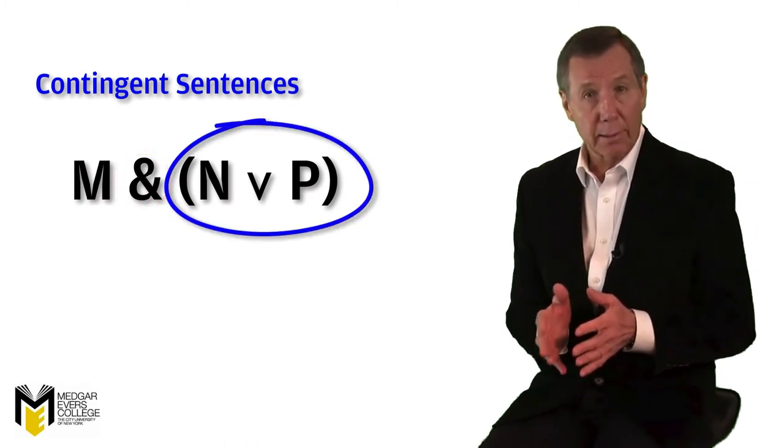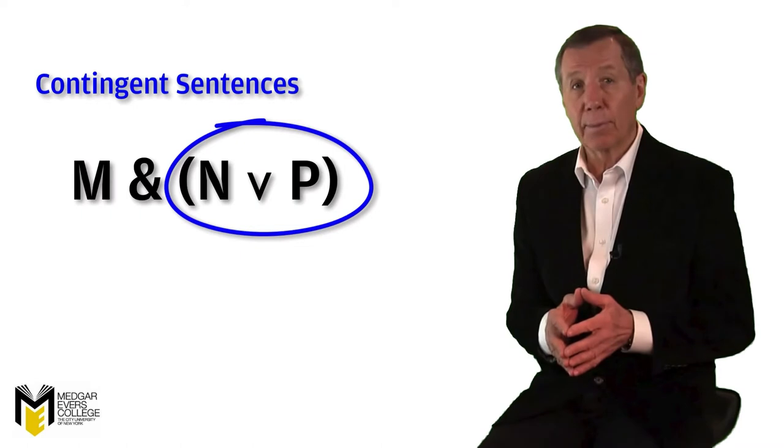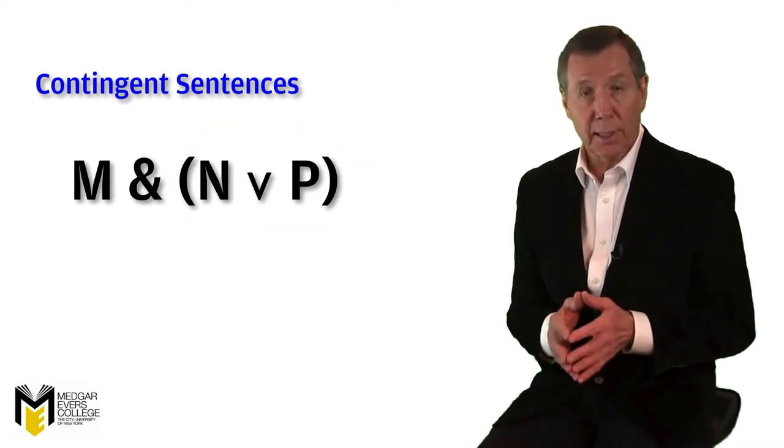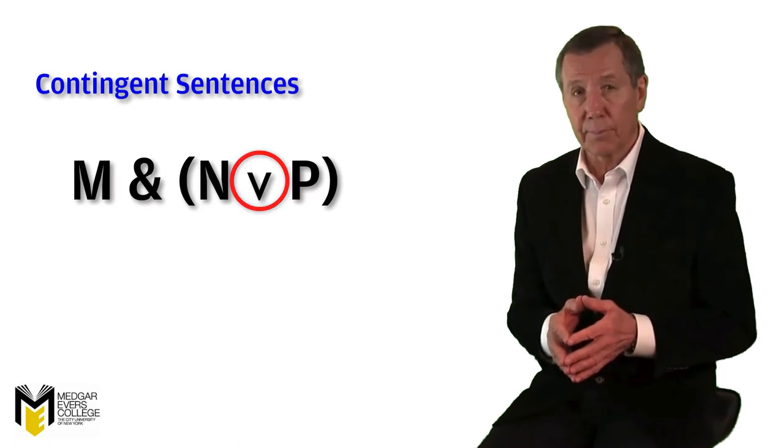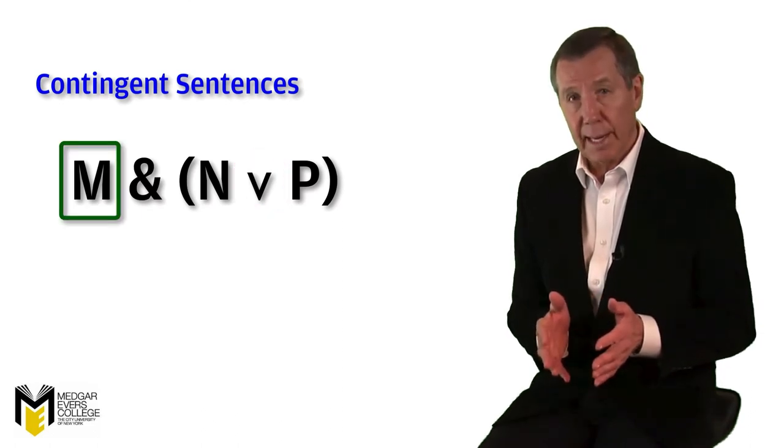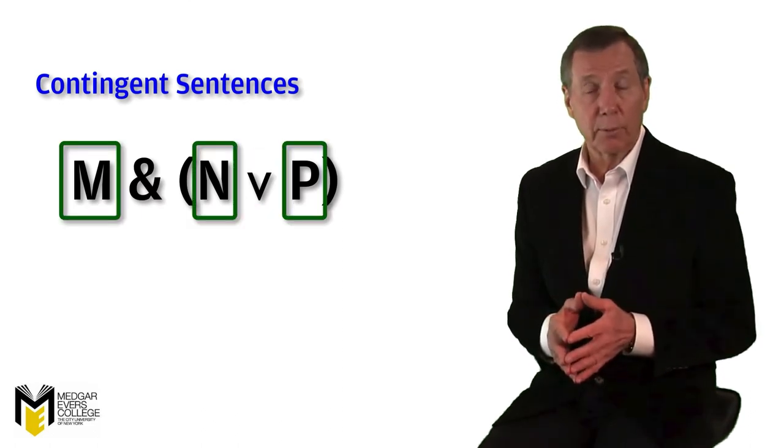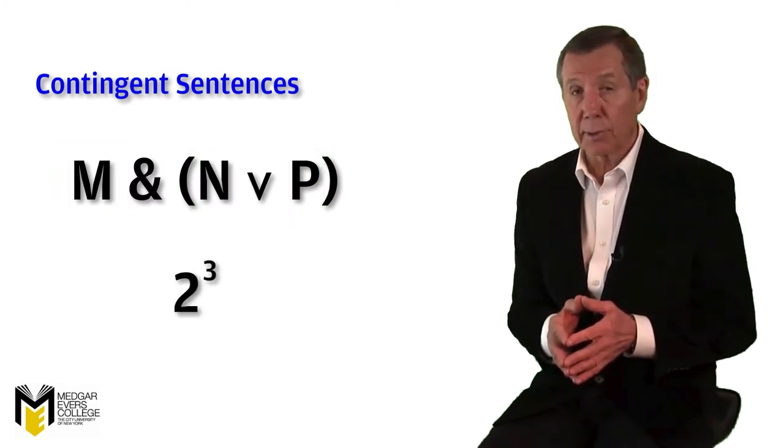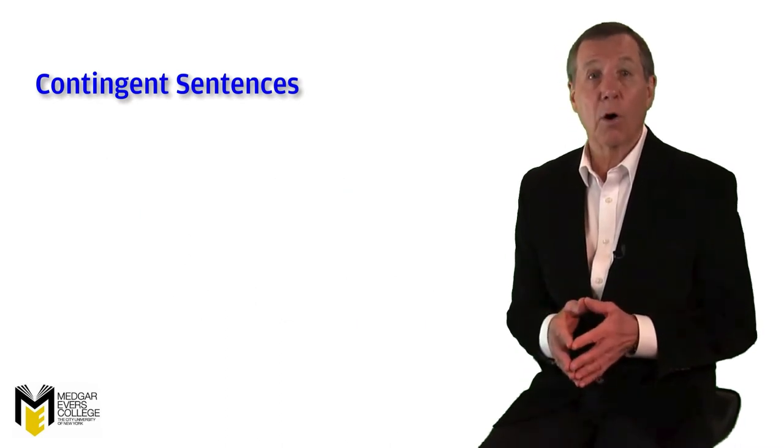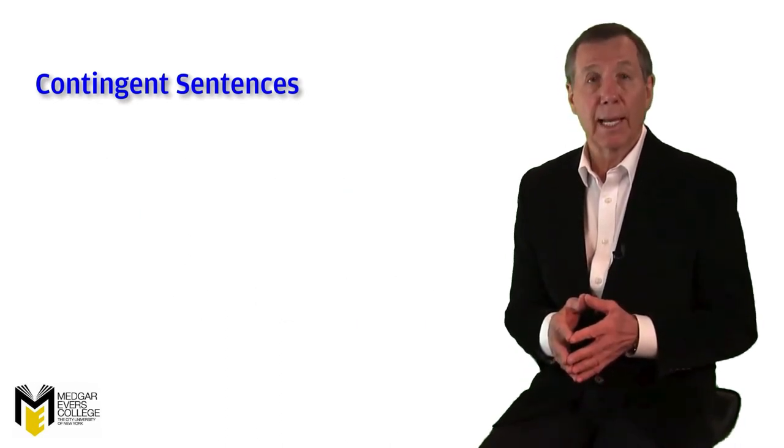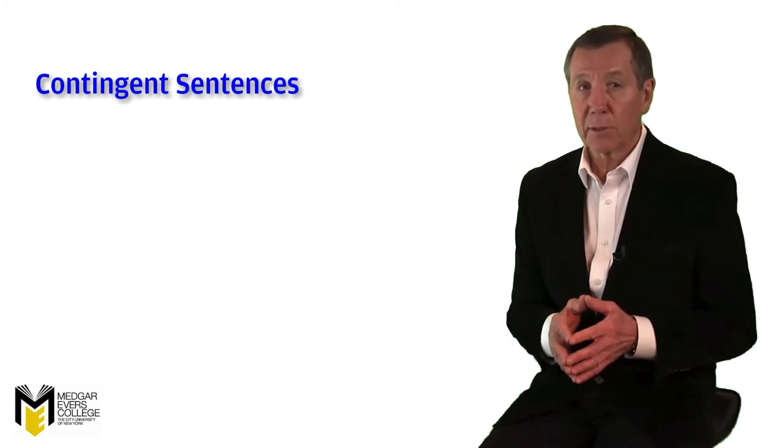The conjunct on the right, the sub-sentence either N or P, is a disjunction, as we can see by the use of V, our symbol for disjunction. We have three variables, M, N, and P, so our truth table will need eight rows, obtained by exponentiating base two to the power of three. Here's the complete truth table, with all our values filled in, and the column for the main connective circled.